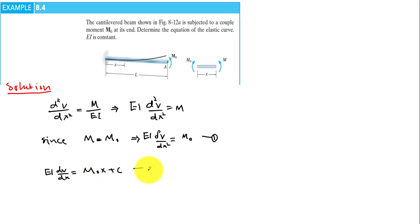This is equation number two. We integrate this equation for the second time, so we have EI multiplied by v equals M naught x² divided by 2 plus C1 x plus C2.